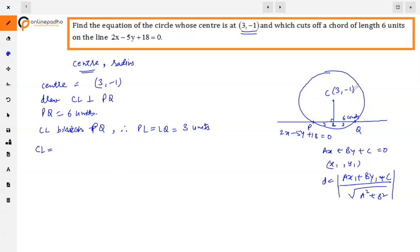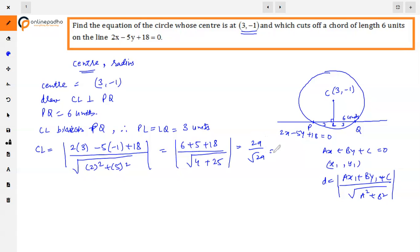Here we apply (3, -1) into the line. So 2 × 3 - 5 × (-1) + 18 divided by the square root of 2² + 5². So here we go: 6 + 5 + 18 divided by square root of 4 + 25. This will be 29 upon square root 29, that is square root 29. The length is square root 29.